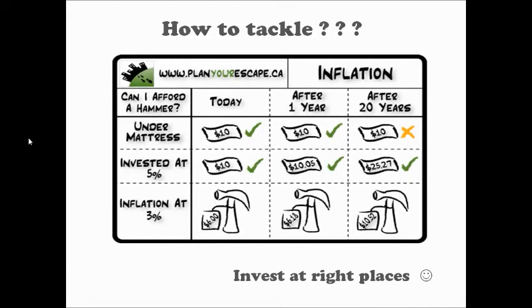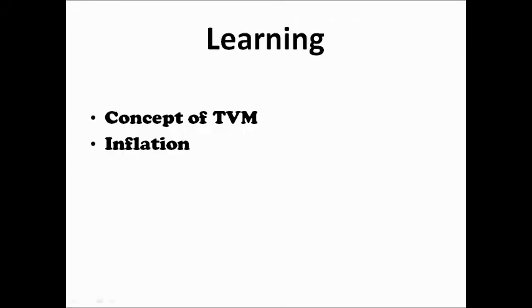Now how to tackle the problem of inflation. If you have $10 and you keep it under the mattress — that is, you keep it at home and do not invest it — after 1 year $10 would still be $10, and after 20 years again $10 would still be $10. But if you invest it at 5%, it grows. Now if the inflation rate is 3%, a product costing $6 today will cost $6.18 after 1 year and $10.52 after 20 years. So if you do not invest your money, you might not be able to buy the same product after 20 years. What you should be doing is invest your money in the right places.